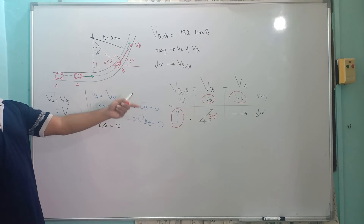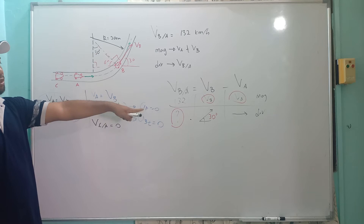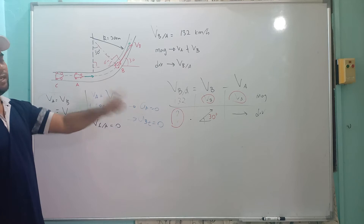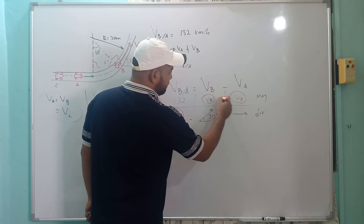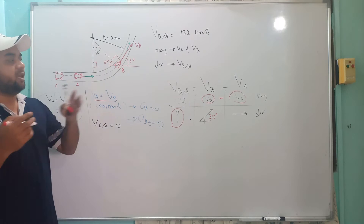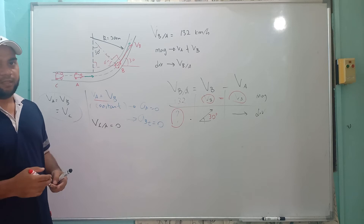We have three unknowns: the magnitude of VA, the magnitude of VB, and the direction of VBA. With rectangular components, we get one equation in x and one in y — only two equations for three unknowns, which cannot be solved. But since we have the condition VA equals VB, we actually have only two unknowns: VA and the direction of VBA, so we can solve the problem.